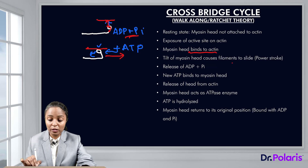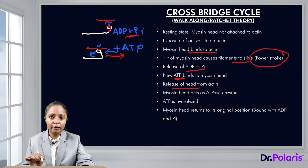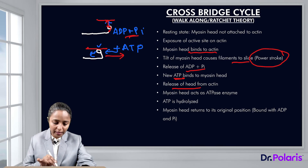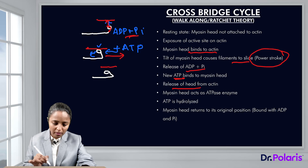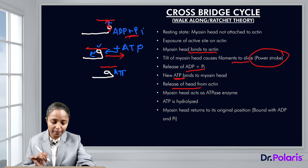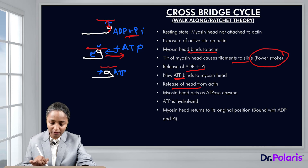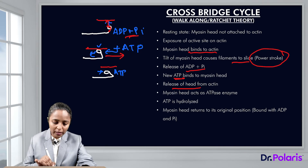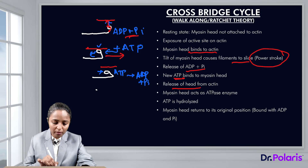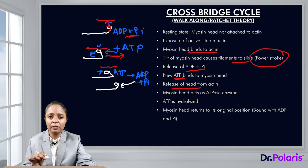The tilt of the myosin head causes the filaments to slide — that is the power stroke. This causes release of ADP and phosphate and binding of new ATP to the myosin head, with binding causing release of the head from actin. The myosin head has intrinsic ATPase activity and cleaves this ATP back to ADP and phosphate. With this cleavage, myosin returns to its original position with bound ADP and phosphate, ready to bind with the exposed active site of actin again.